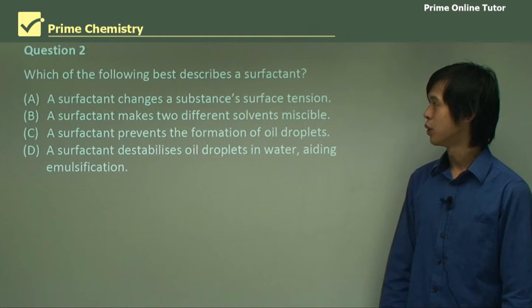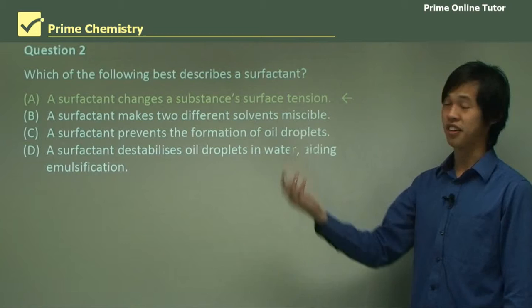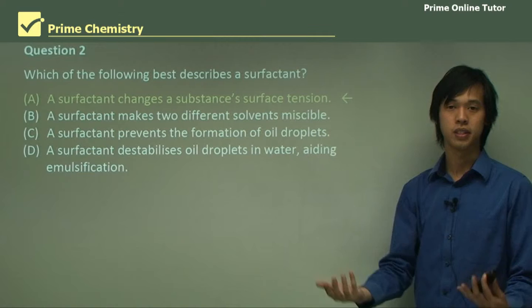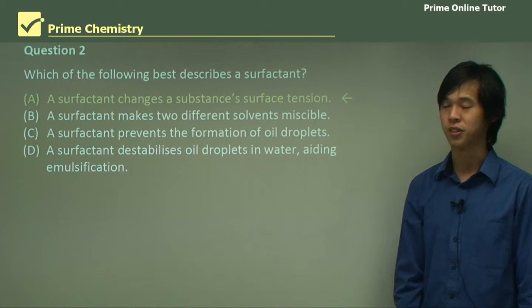Question: which of the following best describes a surfactant? A surfactant changes a substance's surface tension. The word 'surfactant' contains 'surf' for surface — it interacts with the surface tension of a substance, and that's all a surfactant does.